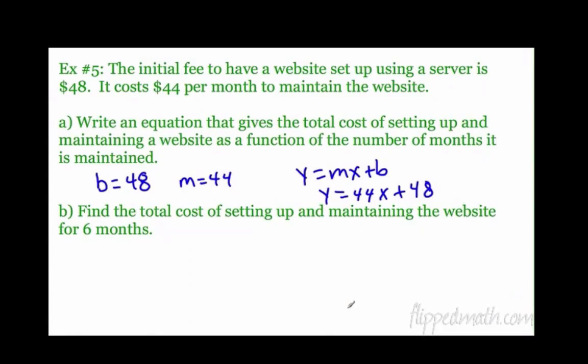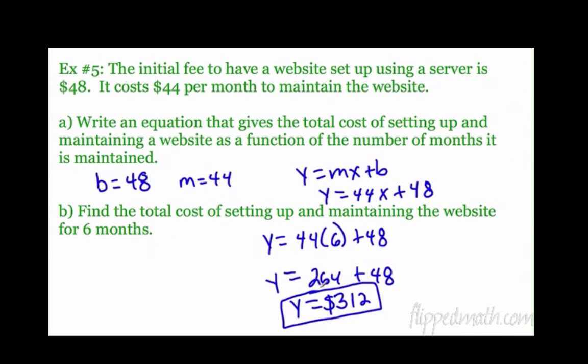The nice thing about having that equation, now we can find out whatever we want with it. In part b, it says find the total cost of setting up and maintaining the website for six months. So x was the per month. So instead of x, we're going to put 6. That's right. 44 times 6 plus 48. So y equals 44 times 6, that's 264. What is 264 plus 48? Thank you, 312. So in six months, it will have cost $312. Excellent.